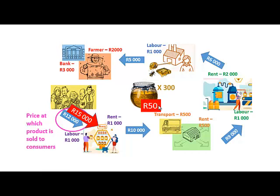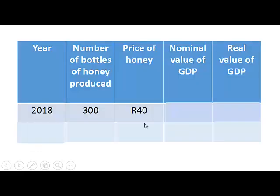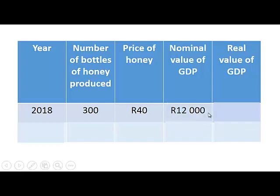All that is different is the price at which it was sold. Distinguishing between nominal and real variables will enable us to remove the effect of the increase in prices. Here we show the total number of bottles of honey produced in 2018. The price of honey was 40 Rand, so the nominal value of GDP is equal to 300 times 40, which is 12,000 Rand.